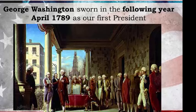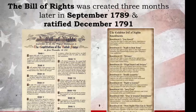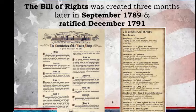Our new form of government, with its creation of the executive branch headed by a president, became official with the swearing in of George Washington, our first president, in April of 1789. And as promised, our Bill of Rights — which we'll be learning all about in an upcoming video — was finished three months later in September of 1789, and ratified two years later in December of 1791.